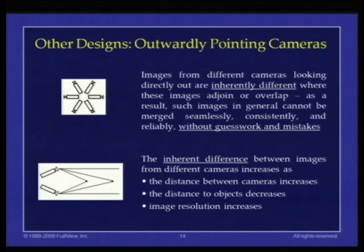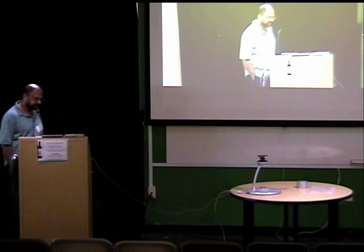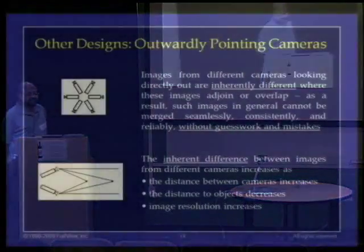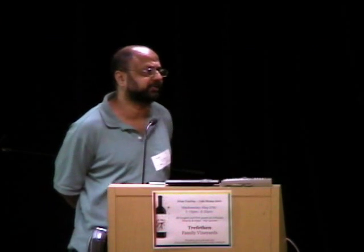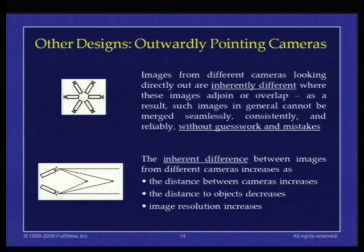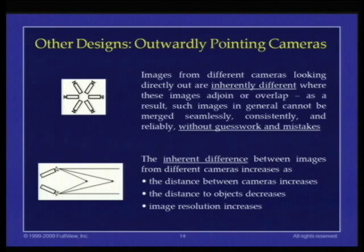What are the alternatives to FullView's design? The first alternative is outwardly pointing cameras — you have a bunch of cameras looking in different directions and stitch those images together. I want to point out that the cameras are inherently different. You can't map an image from one camera to an image from another camera in general, no matter how much processing you do. There will be some surfaces visible in one image that are not visible in the other. You'll have to make assumptions, and you'll have all sorts of artifacts — there will be guesswork and mistakes. There's no way around it.